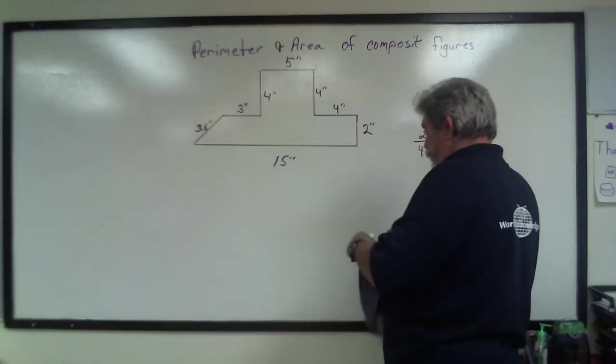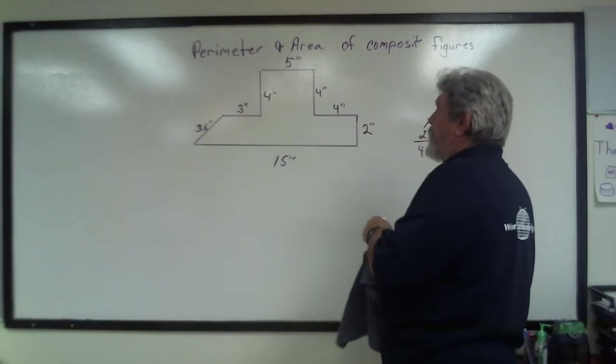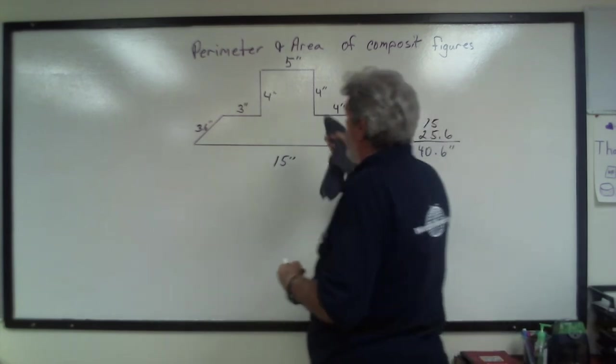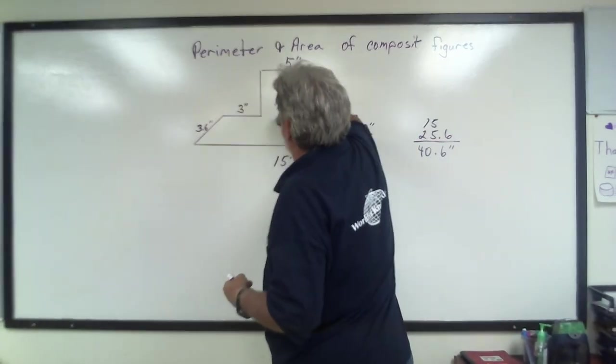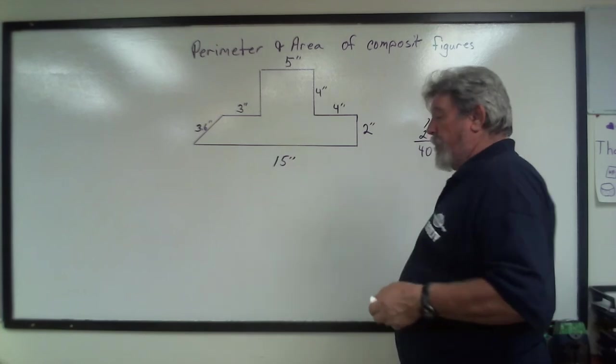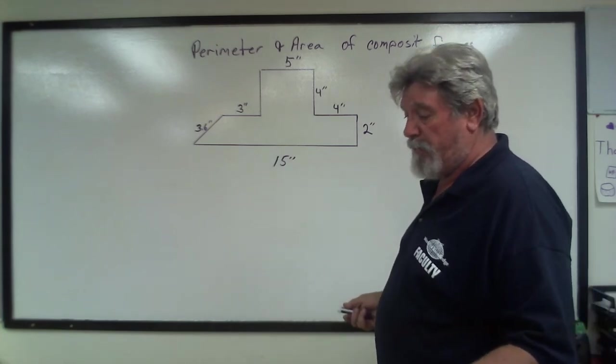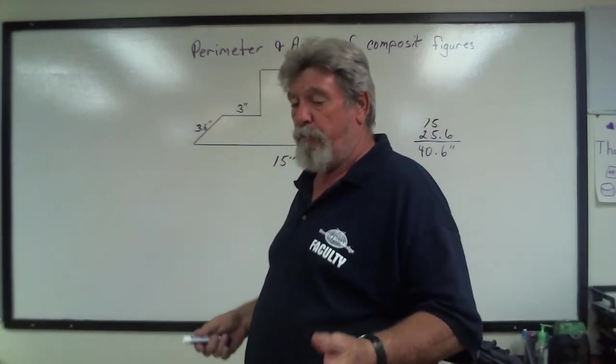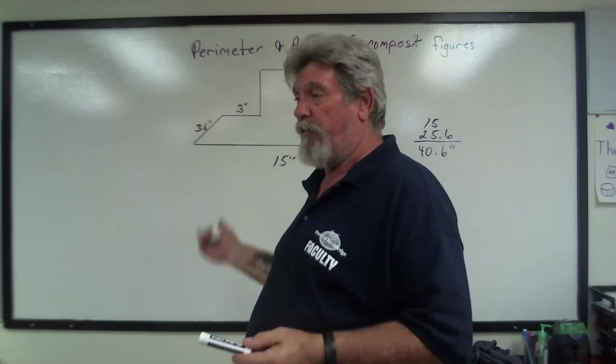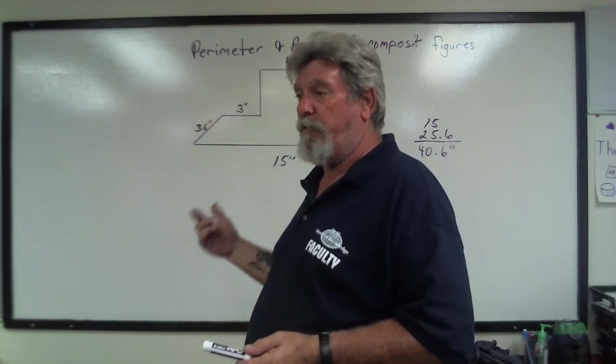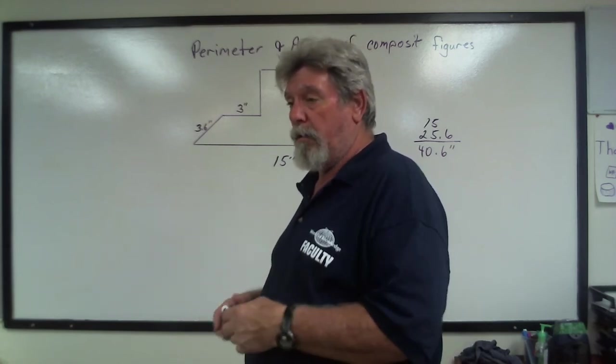Now, that's perimeter. Perimeter is really simple. On a circle, it's actually the circumference, and you know what the formula is for that. It's 2 pi r. So if you have a circle, it's 2 times pi times r.